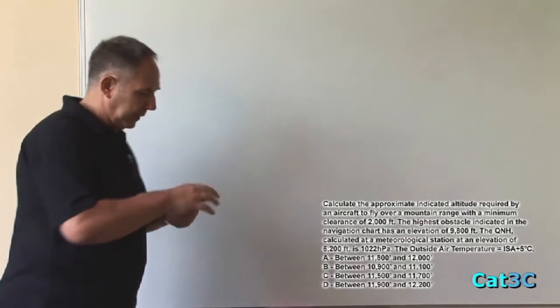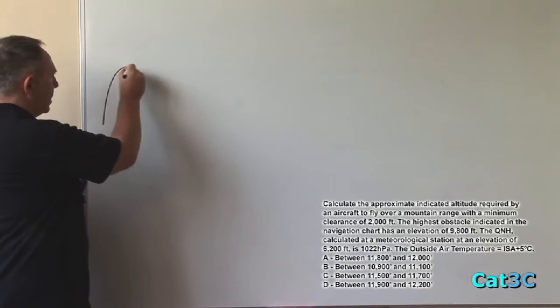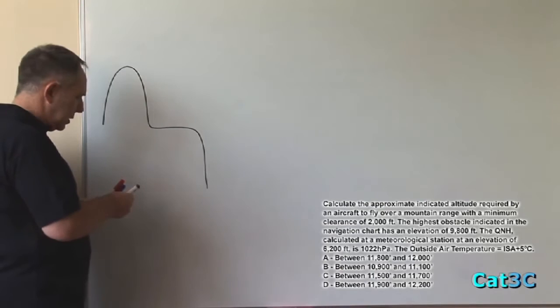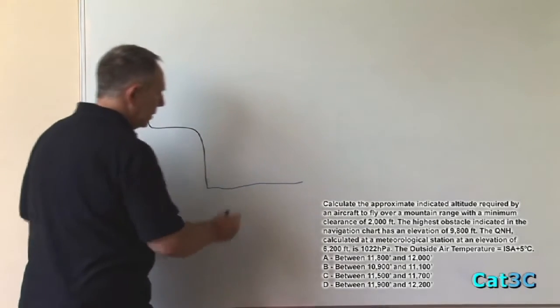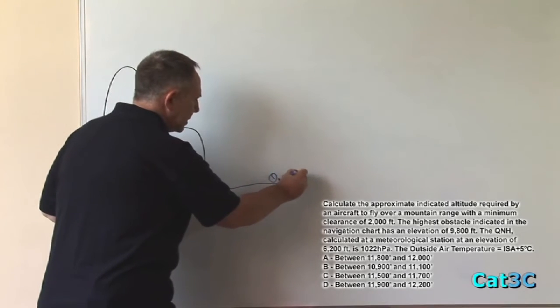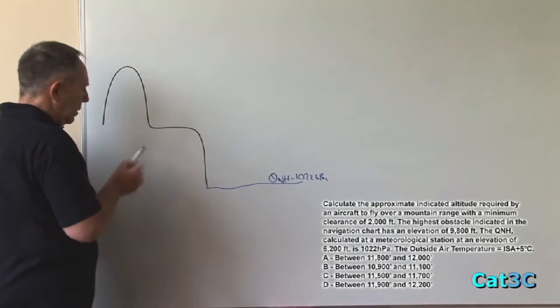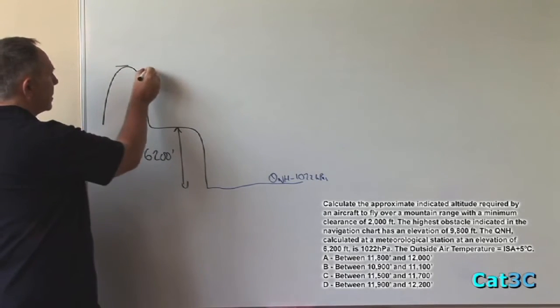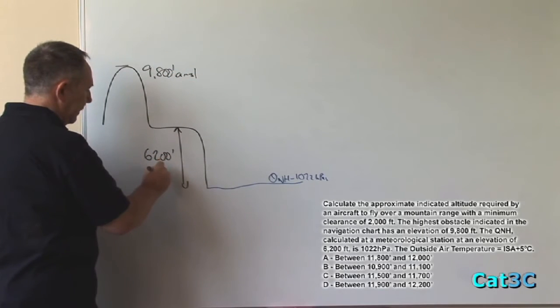The true altitude is actually given to us within the question. And we can solve that in this way. If we realize that we have a mountain range 9,800 feet high and a met station 6,200 feet high, both being measured above sea level where the QNH is 1022 hectopascals. The elevation here is 6,200 feet and the elevation, the highest elevation is 9,800 feet, both being above mean sea level.